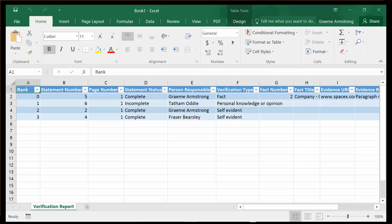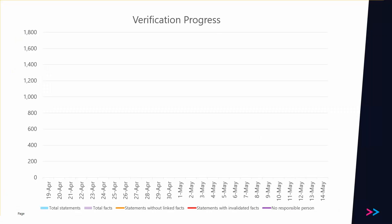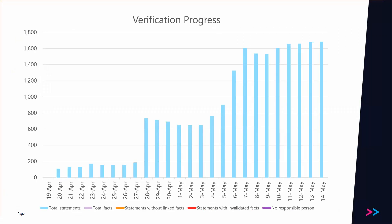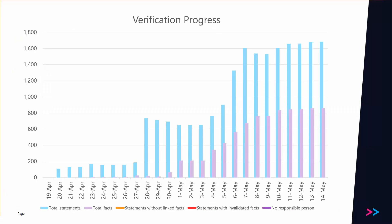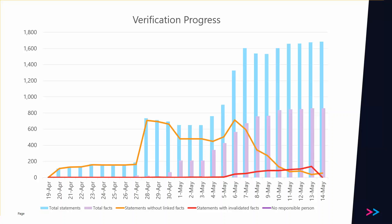The advantage of doing this electronically is that we can do it collaboratively as we go. This is the story of a real document running over about a one-month period. As we were working on it, we boxed as we went. This shows the total number of statements over time, peaked at about 1700. We also tracked the total number of facts, and day by day the number of statements that didn't have any linked facts or a person responsible marked, and how many statements had been invalidated due to editing. Here we were able to see new work as we were writing the document, and then the day we turned the corner around the 6th or 7th of May, where we started to get ahead on the verification process.